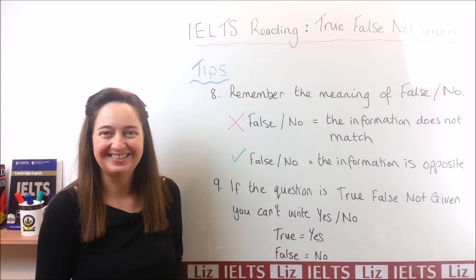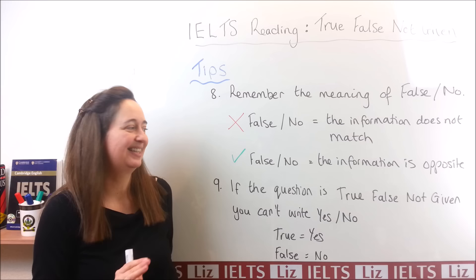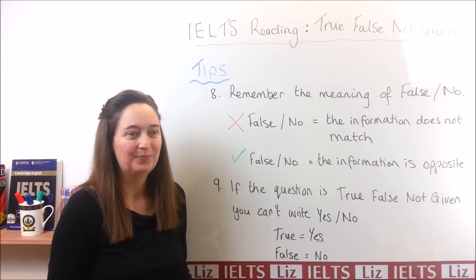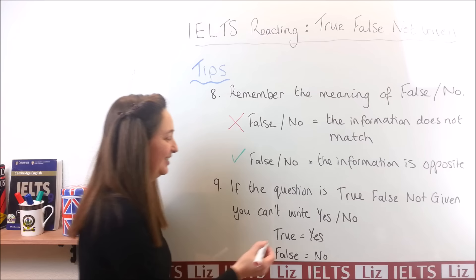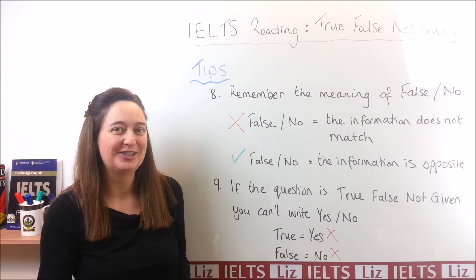Tip number nine: if the question in your reading test is true, false, not given, you must remember to write true, false, or not given on your answer sheet. You can't write yes or no. So if the answer is true and you write yes instead, the answer is wrong. And if the answer is false but you have written no, the answer is wrong again. Please make sure you remember whether you're answering true, false, not given or yes, no, not given, and write the correct word on your answer sheet.